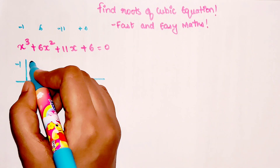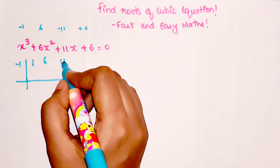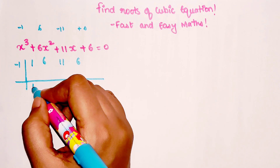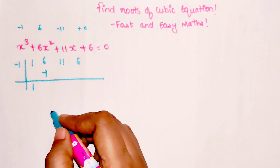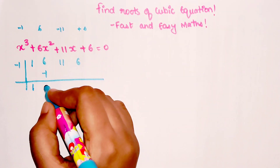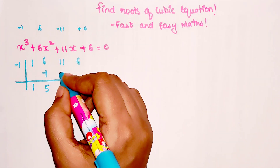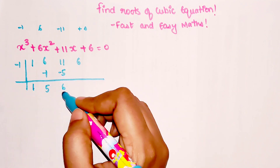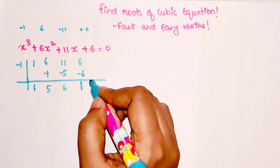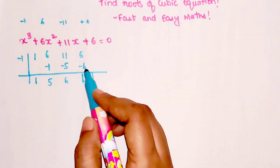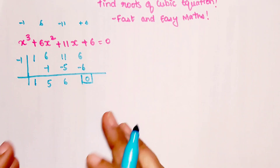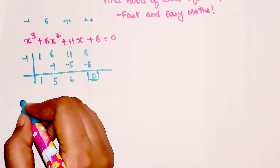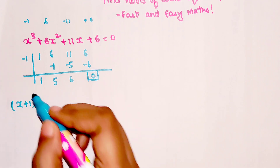Now we'll do synthetic division. We put the coefficients: 1, 6, 11, 6. The first coefficient is written as-is. Multiply 1 by minus one to get minus one; six minus one gives five. Five times minus one gives minus five; eleven minus five gives six. Minus one times six gives minus six; the final answer is zero. If you don't get zero here, you've done something wrong.